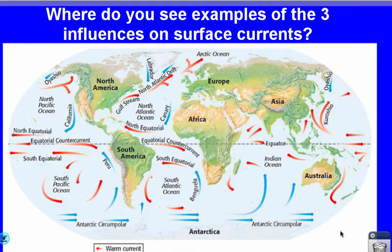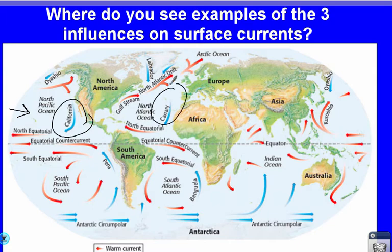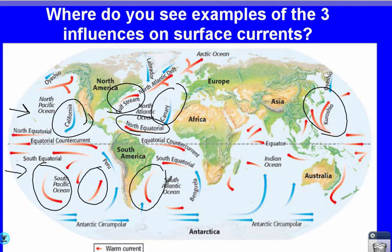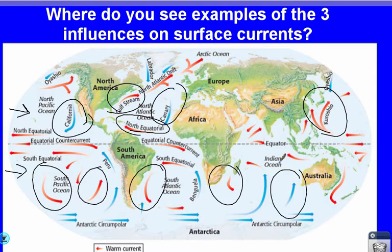There are a couple more things to notice. In the Northern Hemisphere, all currents affected by the Coriolis effect curve in the same direction — they all curve clockwise, whether going north or south. In the Southern Hemisphere, they all curve counterclockwise. So due to the Coriolis effect, currents north of the equator curve clockwise, and those in the Southern Hemisphere curve counterclockwise. This is the same for hurricanes — hurricanes in different hemispheres turn in opposite directions.